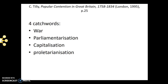So war is a big reason. Parliamentarisation is the increasing importance of Parliament in decision-making. Capitalisation is the coming of the free market economy. And proletarianisation is the increasing concentration of working-class people working in big industries. These are the four changes that he says are the drivers behind the shifts in types of protest.